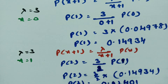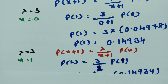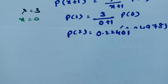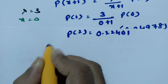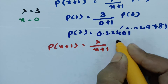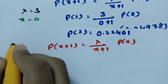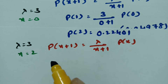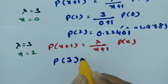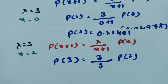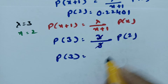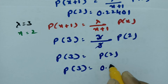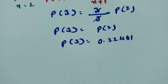We have P(2) = 0.22401. Now put x = 2 in the recurrence formula: P(3) = (3 / (2 + 1)) × P(2) = (3 / 3) × 0.22401. The value here is 0.22401.